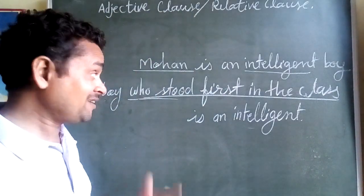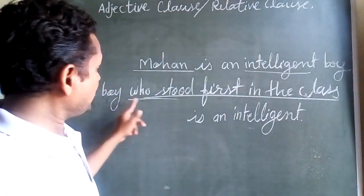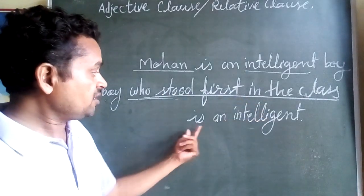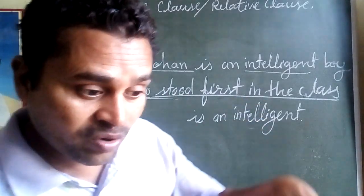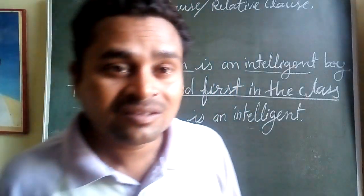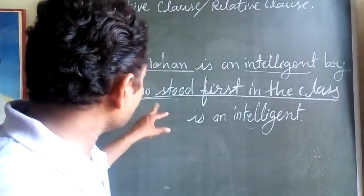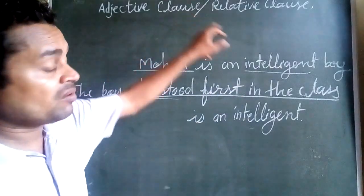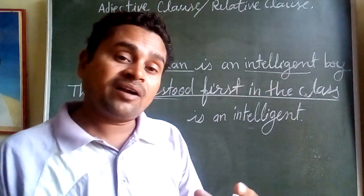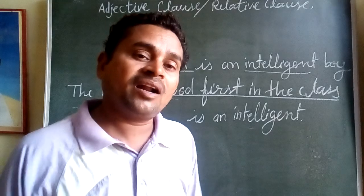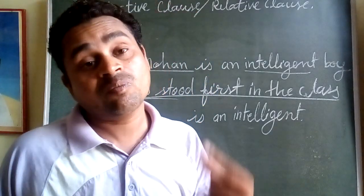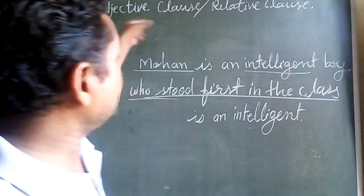So it is clear now that this kind of clause — that describes about a noun or pronoun — is called an adjective clause. 'The boy who stood first in the class is an intelligent boy. That boy is so smart, so wise.'